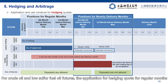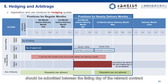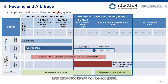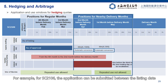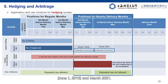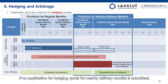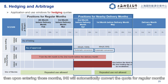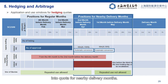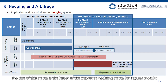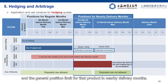For crude oil and low sulfur fuel oil futures, the application for hedging quota for regular month should be submitted between the listing day of the relevant contract and the last trading day of the third month before the delivery month. Late applications will not be accepted. For example, for SC2106, the application can be submitted between the listing date June 1, 2018 and March 2021. Hedging quota for regular month is usable right from the date of quota approval. If no application for hedging quota for nearby delivery month is submitted, then upon entering those months, INE will automatically convert the quota for regular month into quota for nearby delivery month. The size of this quota is the lesser of the approved hedging quota for regular month and the general position limit for that product in nearby delivery month.